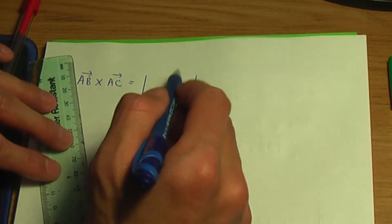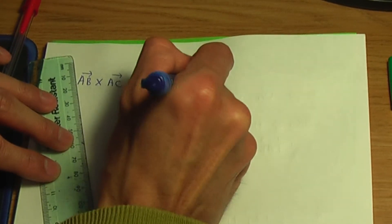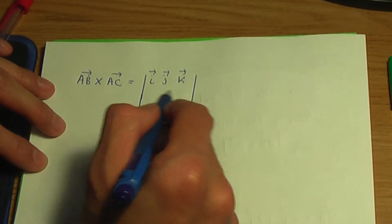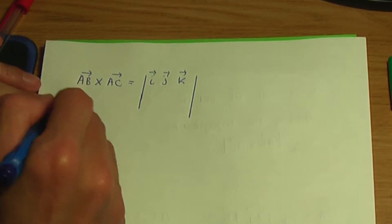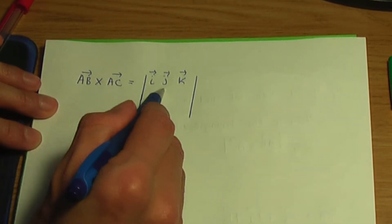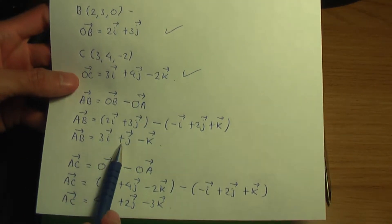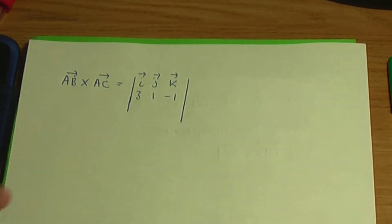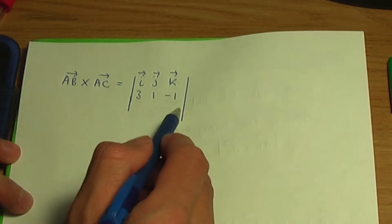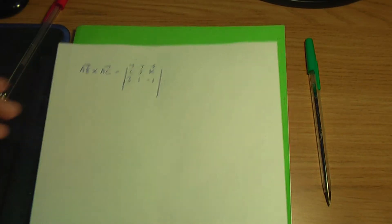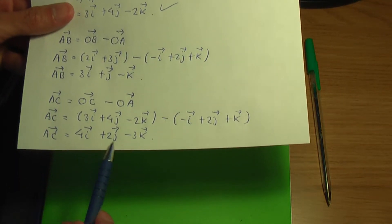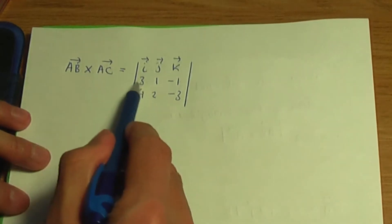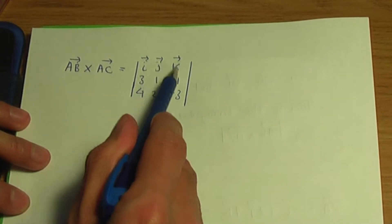To work out the vector cross product, the top row of the 3 by 3 matrix contains the unit vectors I, J and K. The second row contains the components of I, J and K in AB, which are 3, 1 and minus 1. The third row contains the components of I, J and K in AC, which are 4, 2 and minus 3. It's very important to write the components in the order I, J, K.